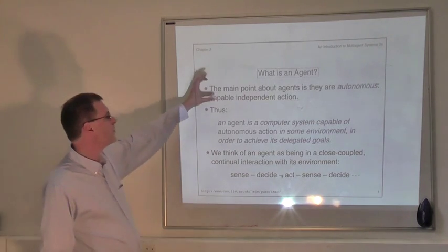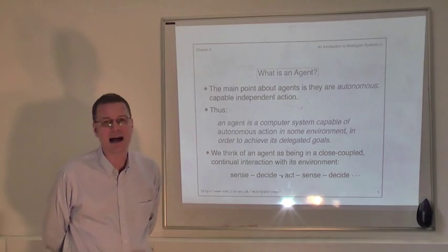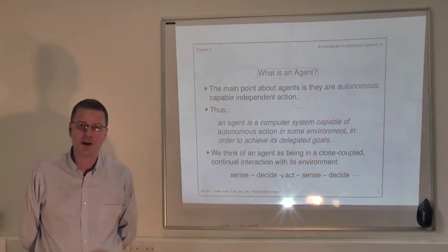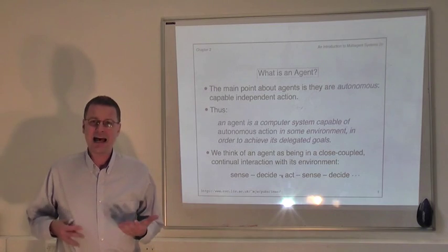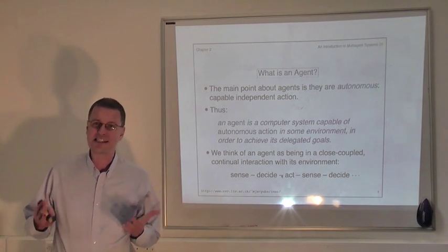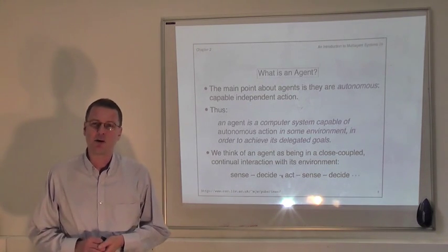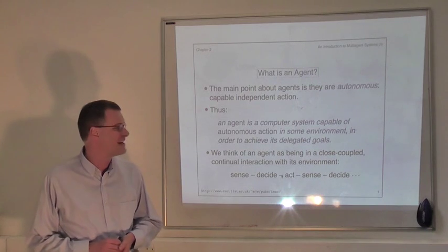In Chapter 1, we saw that the main point about agents is that they are autonomous entities. Autonomy, in this sense, simply means having the capability to decide for itself how best to go about achieving its delegated goals.